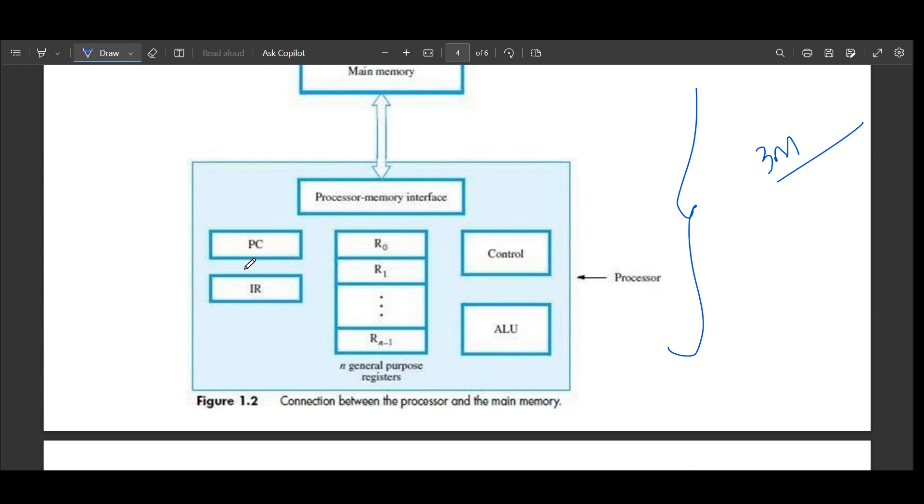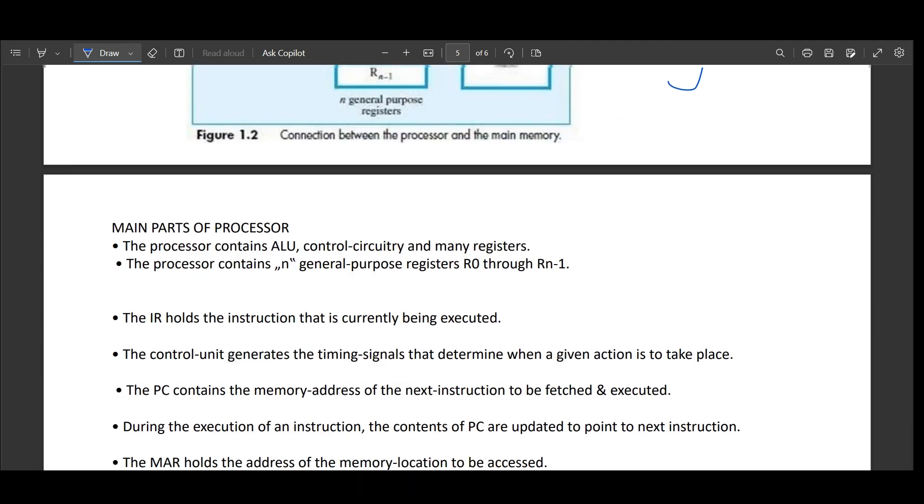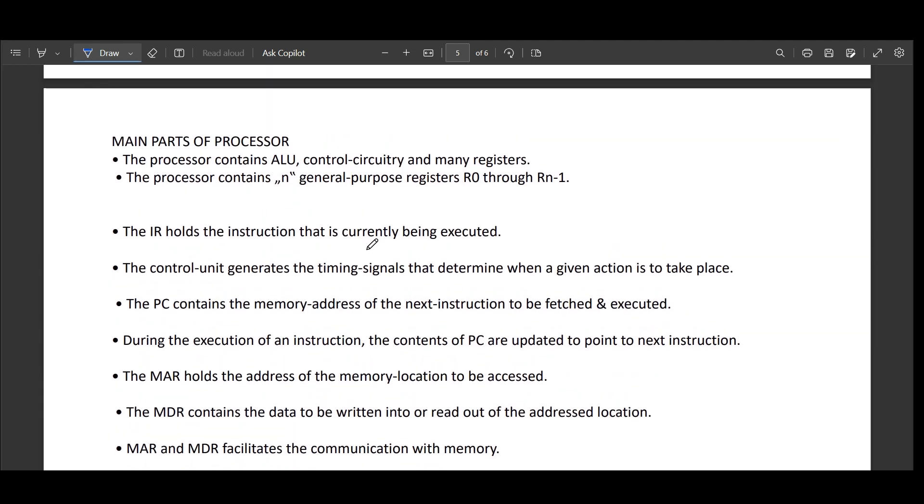As mentioned, you can see PC here. PC is nothing but program counter. So what does PC do? PC contains the address of next instruction to be fetched and executed. Simple. PC is program counter. It contains the memory address of the next instruction to be fetched and executed. If you write this, half mark or one mark can be allocated.